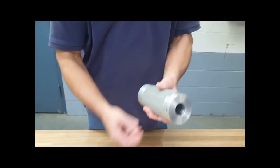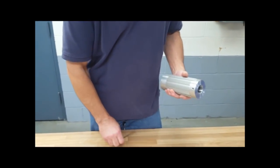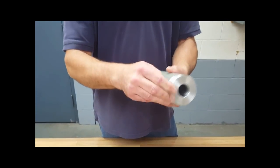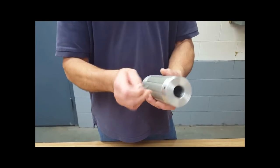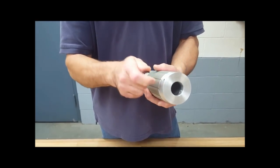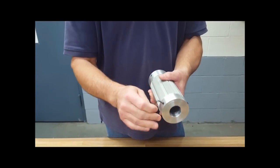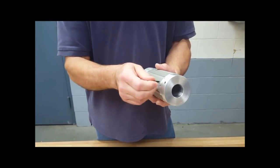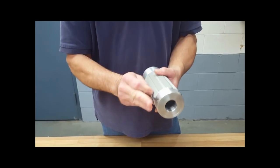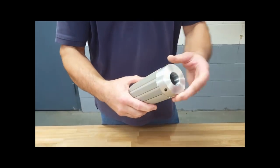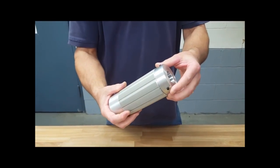These set screws are going to be loosened up with a 1/8th Allen wrench. They don't need to be pulled all the way out, just loosened up three quarters of the way out.